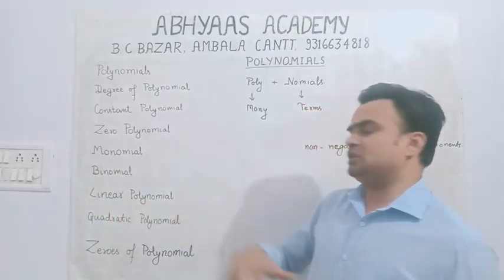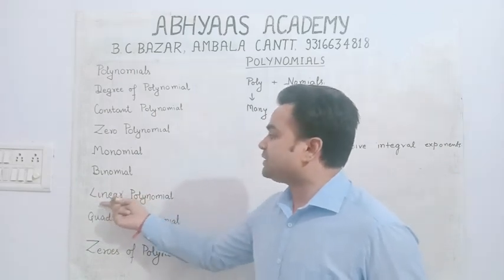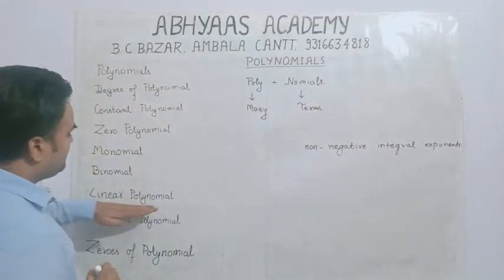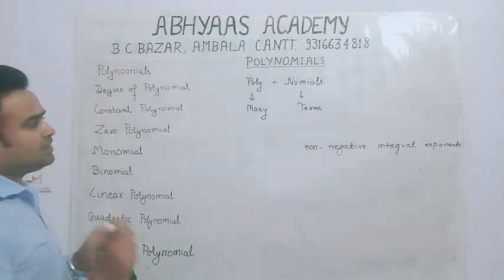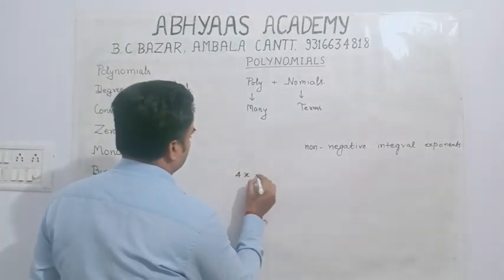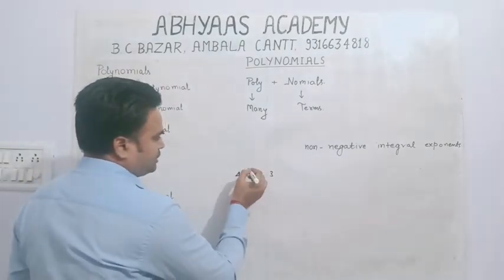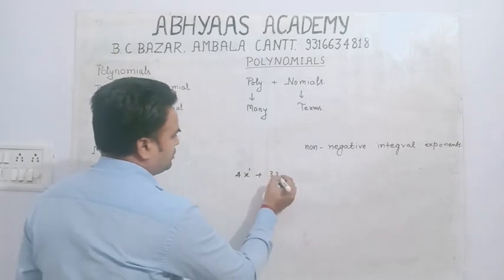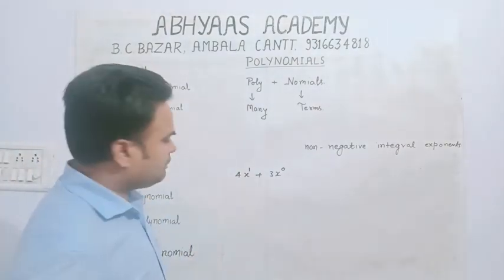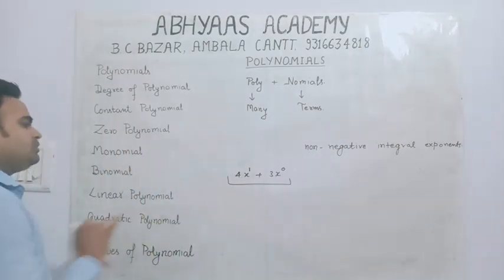Next topic है linear polynomial। एक ऐसा polynomial जिसकी degree 1 हो — मतलब highest power 1 हो — उसको हम linear polynomial बोलते हैं। जैसे 4x + 3: यहाँ x की power 1 है और 3 को x to the power 0 लिख सकते हैं। तो highest power of x is 1, इसलिए यह linear polynomial है।